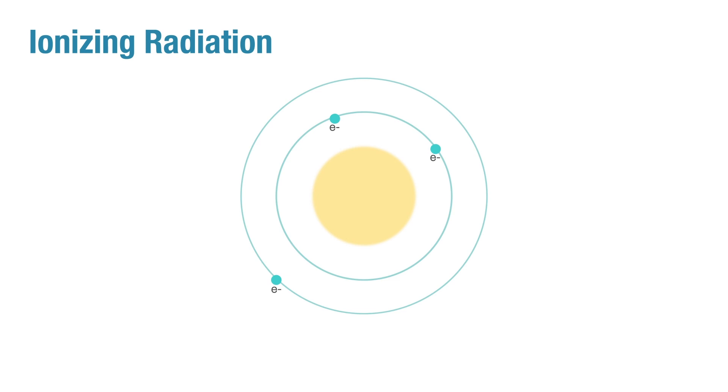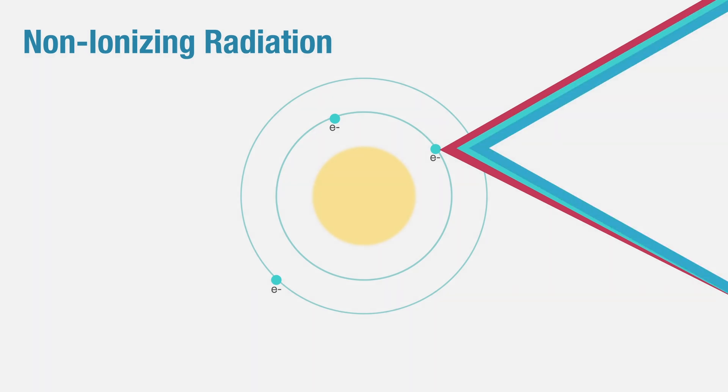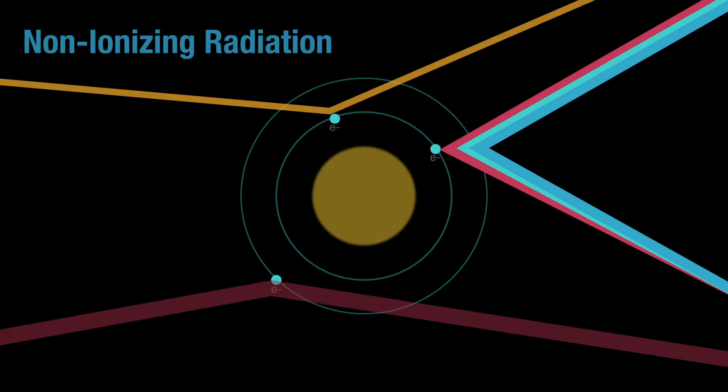You can have other forms of radiation which are not ionizing, which we would call non-ionizing. Examples of these include the visible wavelengths of light, like red, green, blue light, as well as infrared, microwave, etc. Here you can see that when light can scatter off of electrons but it doesn't have enough energy to remove them, we would consider that to be non-ionizing radiation.